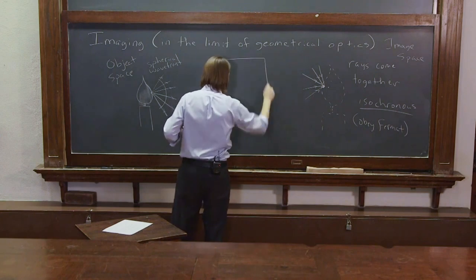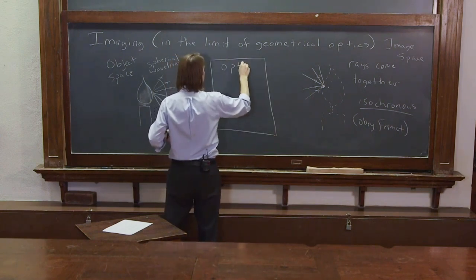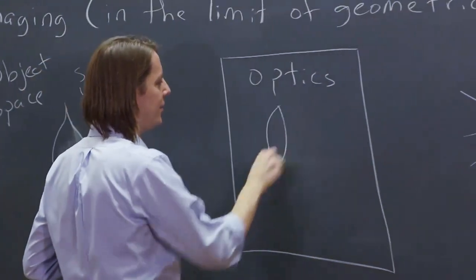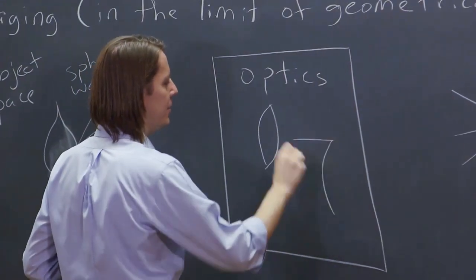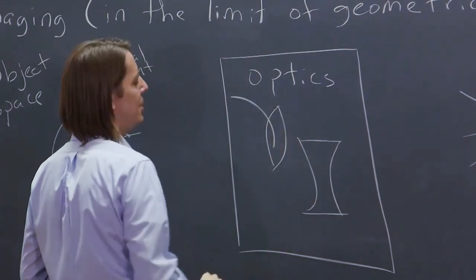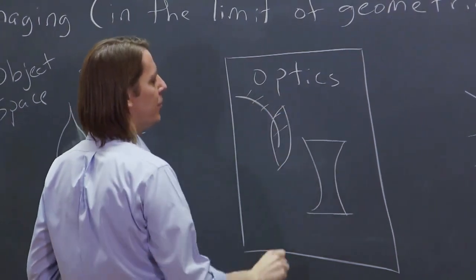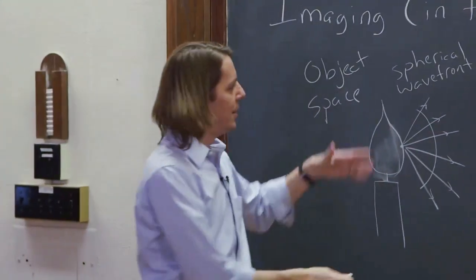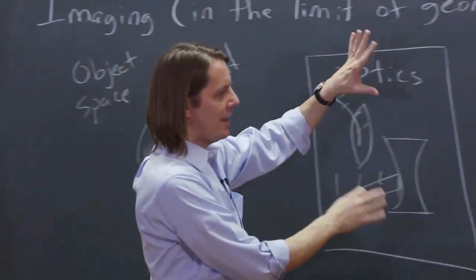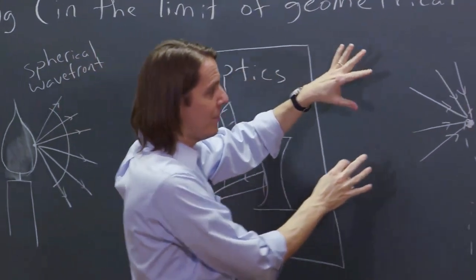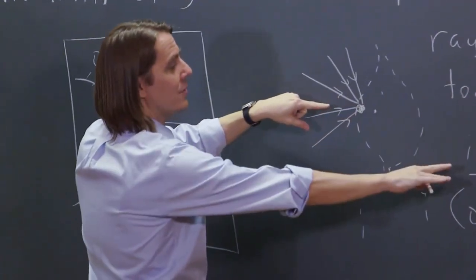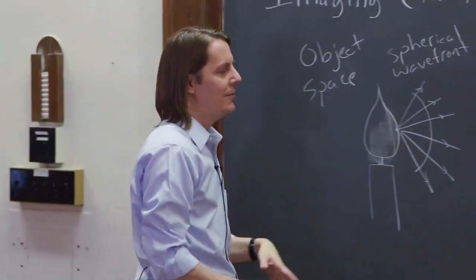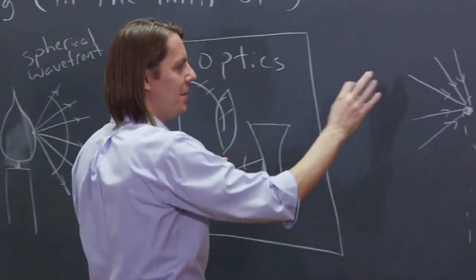You put a bunch of stuff in here. Maybe you put a lens like that. Maybe there's an inverse lens over here. Maybe there's a curved mirror over there and a flat mirror here. Whatever it is, you have an optical system that manipulates all these rays and it has to do two things. It has to make them come together to a point and they have to do it isochronous for everything to work out. So in geometrical optics, if you design this thing, you will get an image.